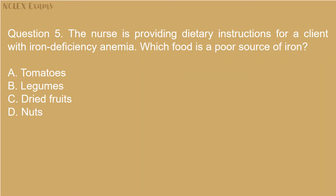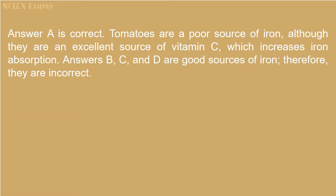Question 5: The nurse is providing dietary instructions for a client with iron deficiency anemia. Which food is a poor source of iron? Answers A, C, and D are good sources of iron, therefore they are incorrect.